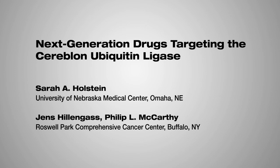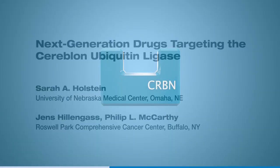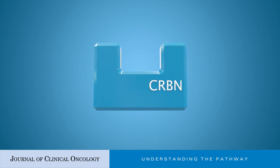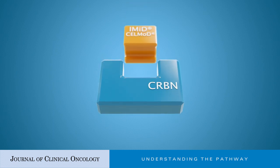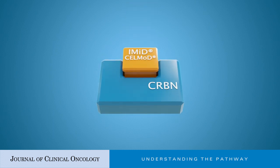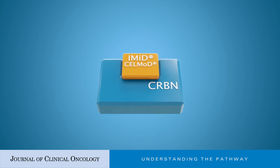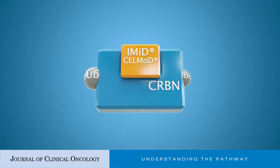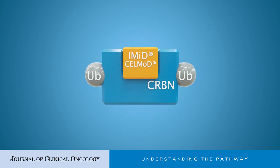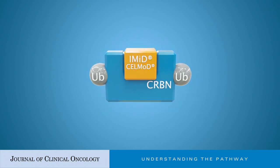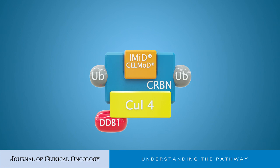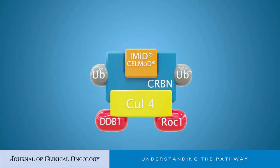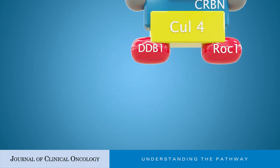Next generation drugs targeting the Cereblon ubiquitin ligase — Immunomodulatory Drugs (IMIDs) and Cereblon CRBN E3 Ligase Modulation Drugs (CellMods) — bind CRBN and induce the ubiquitination of specific substrates. CRBN, along with CULN4, DNA Damage Binding Protein 1 (DDB1), and Ring Finger Protein, form the CUL4 Ring E3 Ligase Complex, which has E3 ubiquitin ligase activity.